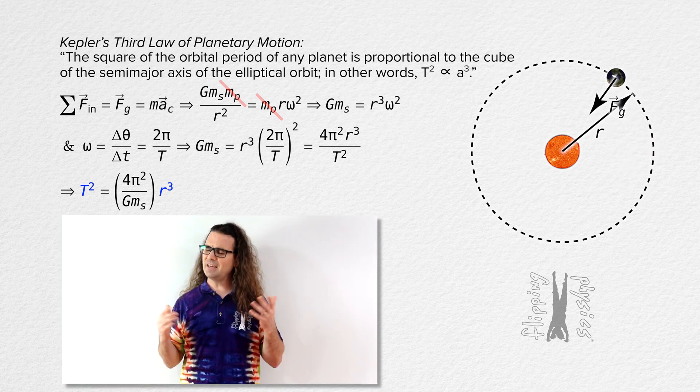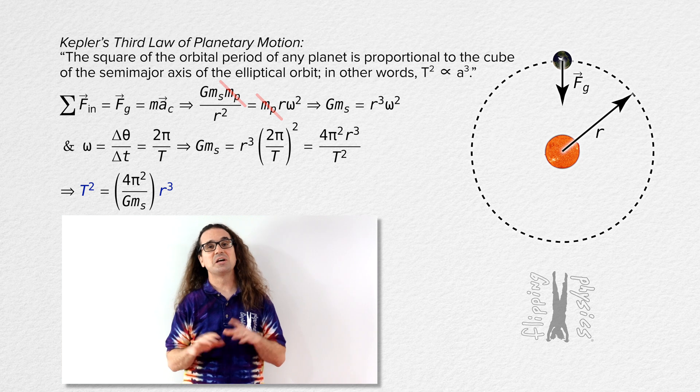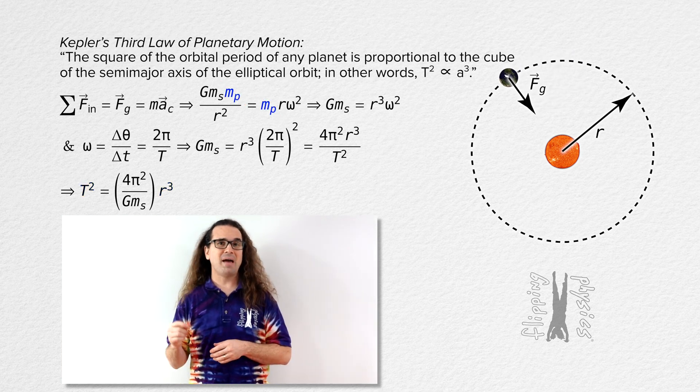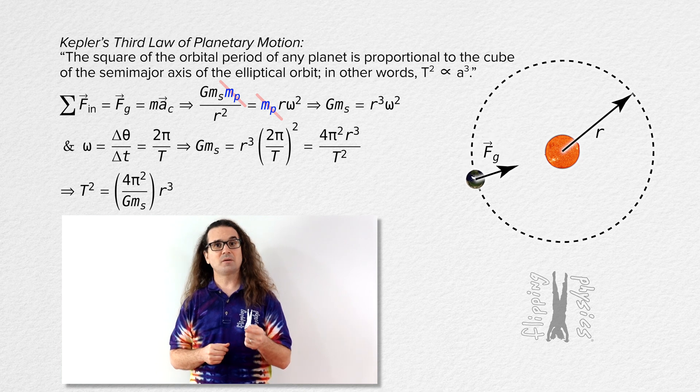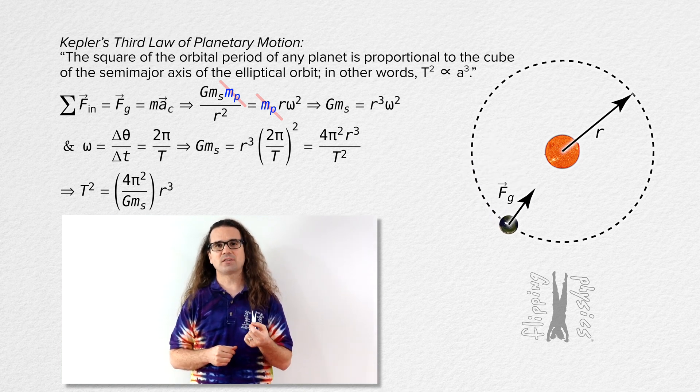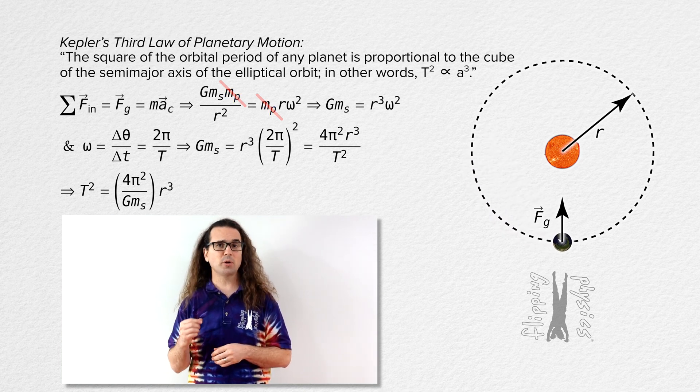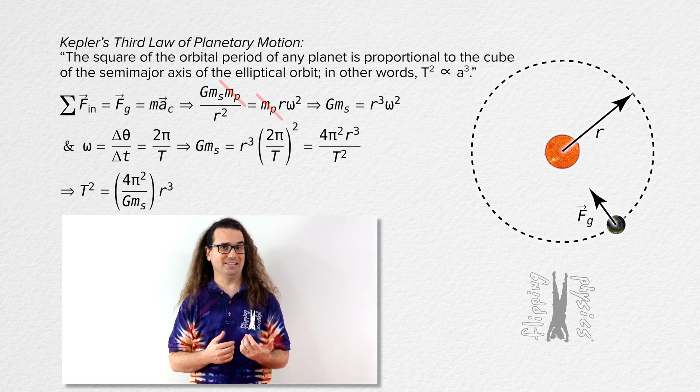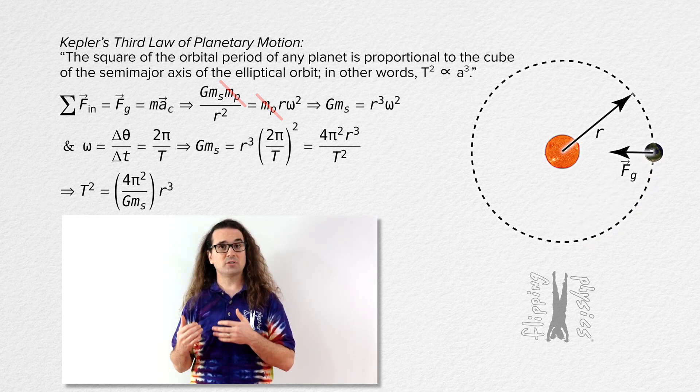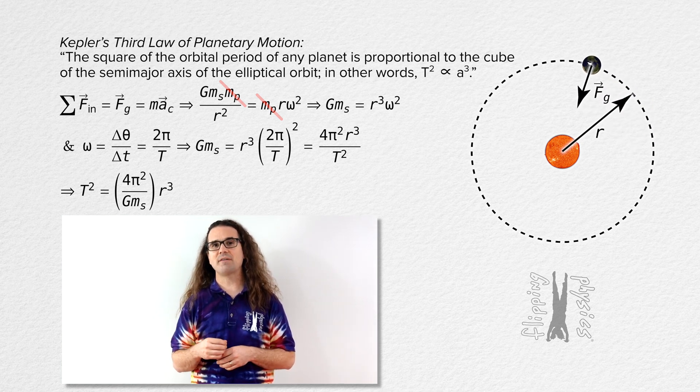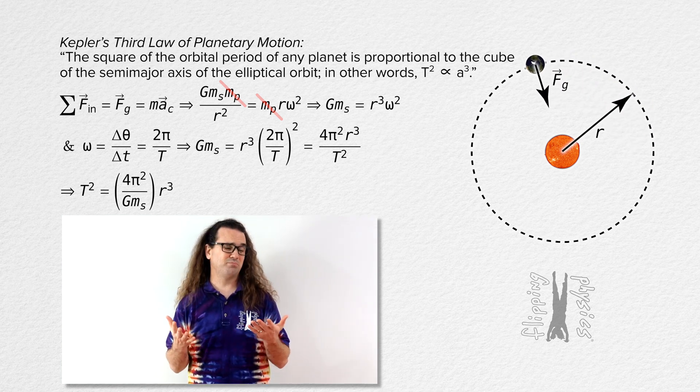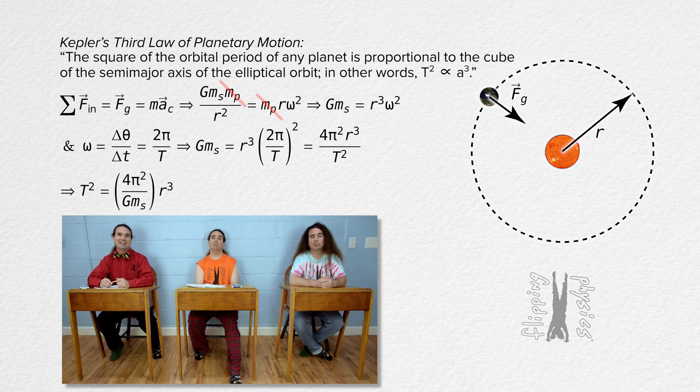Very nice, everybody. Thank you. You are welcome. I do want to point out that the mass of the planet canceled out of the equation. That means that the mass of the planet does not affect the relationship between the planet's orbital period and semi-major axis. Every object with the same orbital semi-major axis a will take the same amount of time to travel around the Sun, which is pretty cool. Absolutely.